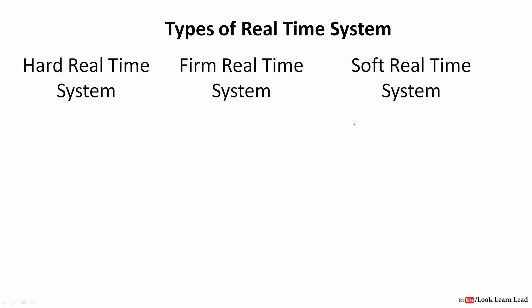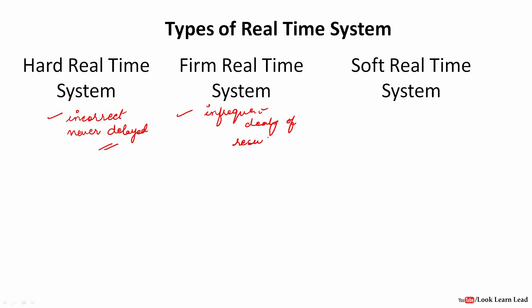In a hard real-time system, if the results are delayed, the system is considered incorrect — the result should never be delayed. In a firm real-time system, infrequent delay of results is allowed. In a soft real-time system, even if there is frequent delay of results, there would be no catastrophic change in the environment.